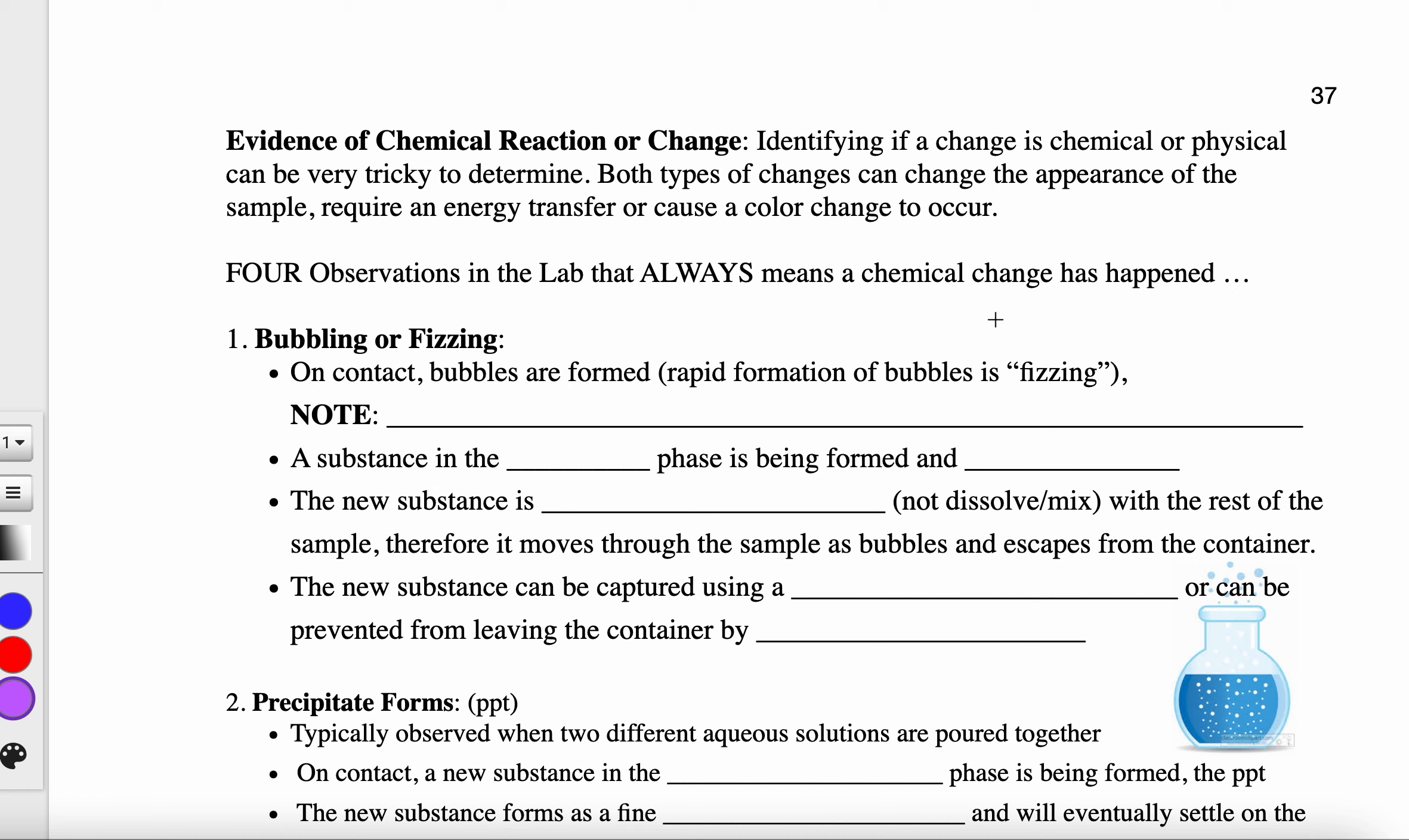The first thing is bubbling or fizzing. When you take two materials and put them together, and immediately on contact there are bubbles that form rapidly so it looks like fizzing, this is probably an indicator that it's a chemical change.